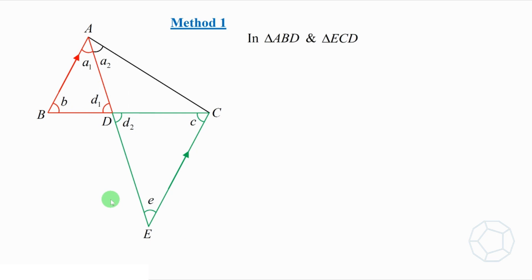Label the angles as shown in the figure. First of all, we'll have A1 is equal to E because they are the alternate angles of the parallel lines. Likewise, we'll have B is equal to C with the same reason. For the third pair, D1 and D2 are vertically opposite angles. Therefore, triangle ABD is similar to triangle ECD.